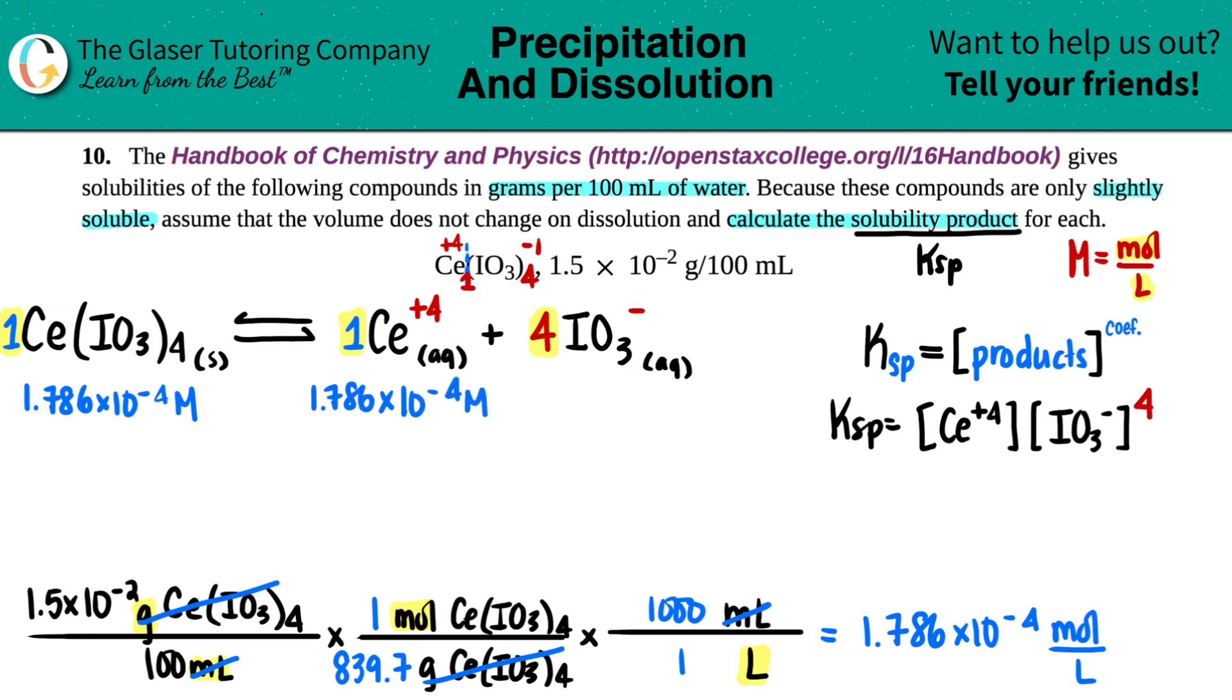But now when I come over here, I see that I have a four. So what am I going to have to do? I take the number and I just multiply it by four. So in this case, I have four times the 1.786 times 10 to the negative fourth molarity. Let's see what that number is. 1.786 times 10 to the negative fourth times four. I have 7.144 times 10 to the negative fourth molarity. These are your two concentration values that we're now going to plug into this KSP expression.